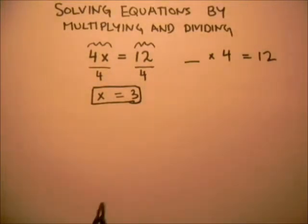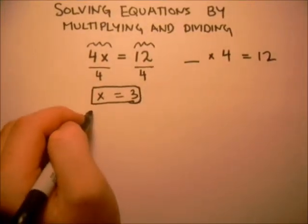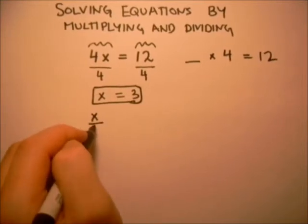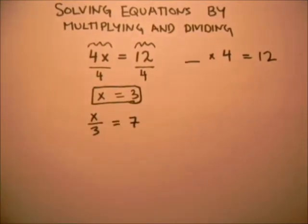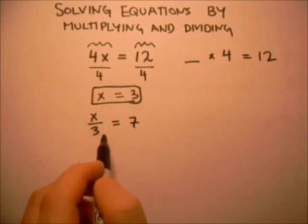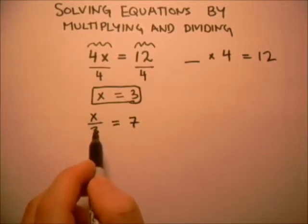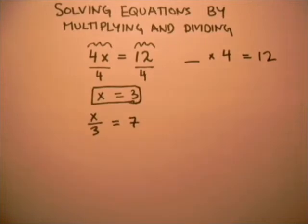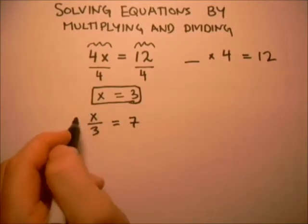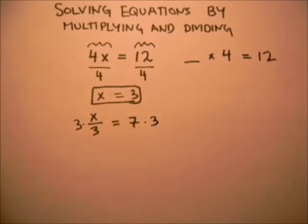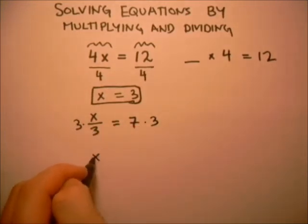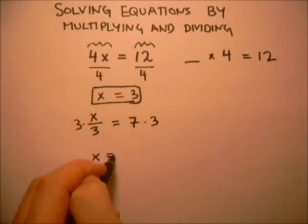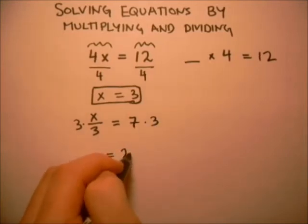Let's look at another example. What if we had x over 3 equals 7? Well, then what we have here on the left hand side has to be the same as what we have on the right hand side. So if we just multiply both sides by 3, then these two 3s cancel, and we just get x on this side equals 7 times 3, which is 21.